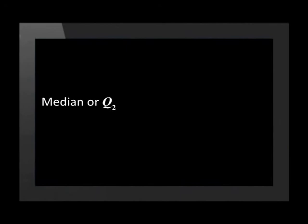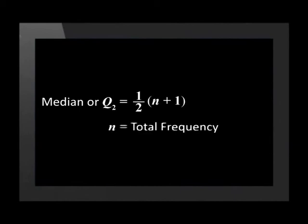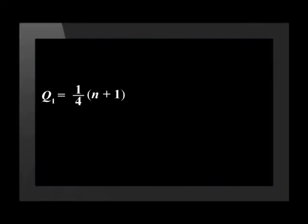All of these were estimated answers. Alternatively, we can use formulas to determine the position of the median, lower and upper quartiles and therefore have more accurate answers. To find the position of the median, we use the formula: half of (n + 1), where n is equal to the total frequency. To find the lower and upper quartiles, we use similar formulae — for the lower quartile the formula is one quarter of (n + 1).